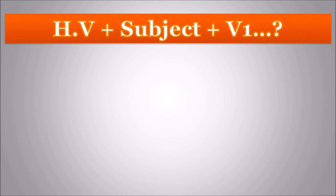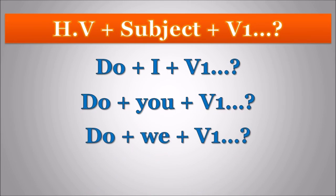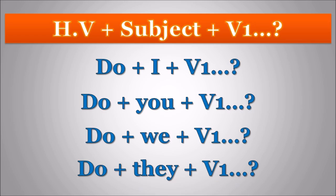So far you have seen how to make interrogative sentences with subjects I, you, we, and they, for which we used the helping verb 'do' followed by the subject and the first form of verb. However, in order to make sentences with subjects he, she, it, you will need to use the helping verb 'does'.